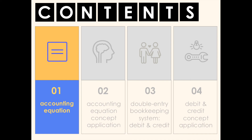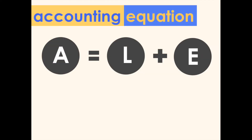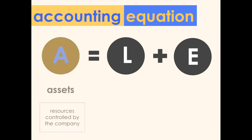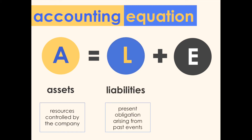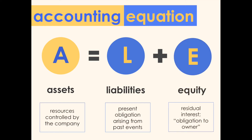First off, let's start with the accounting equation. Here is the accounting equation — A equals L plus E. These are terms we've defined previously: A refers to assets, which are resources controlled by the entity like cash, computers, land, and so on. L refers to liabilities, which are present obligations of the company arising from past events.